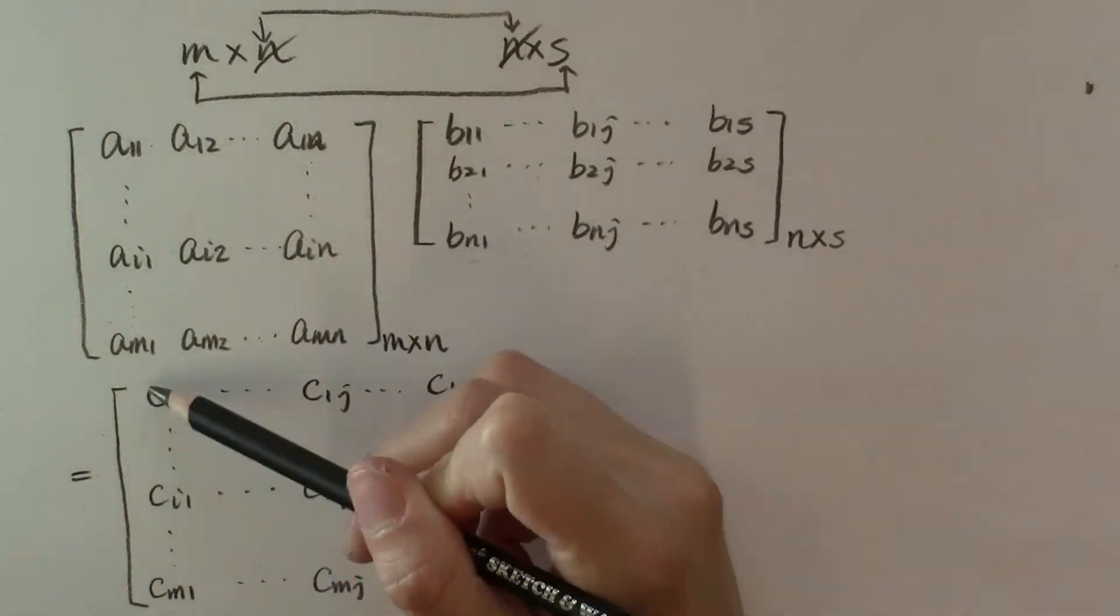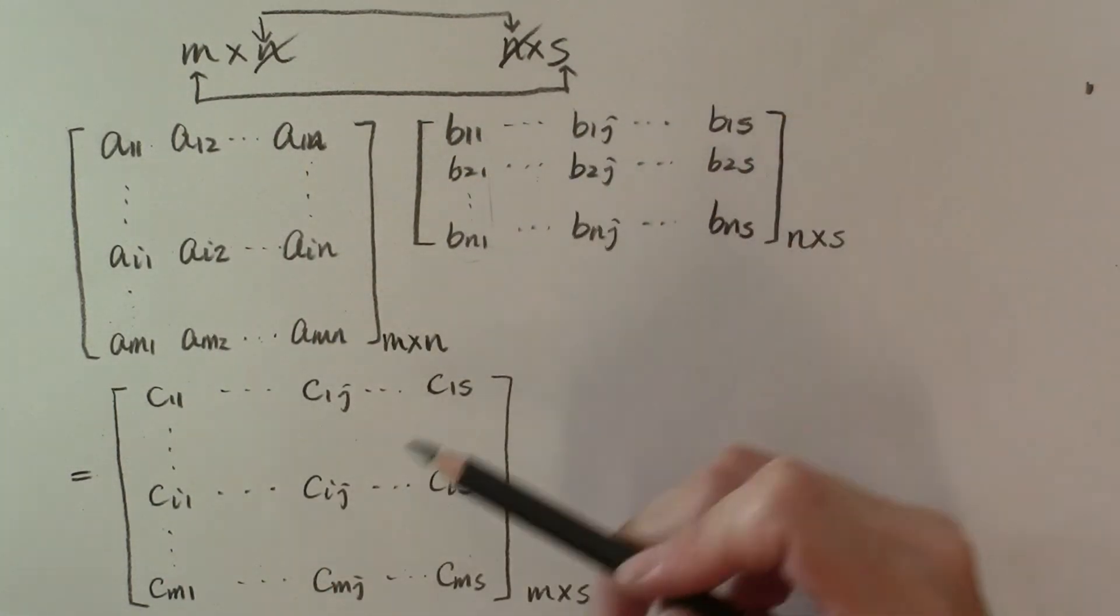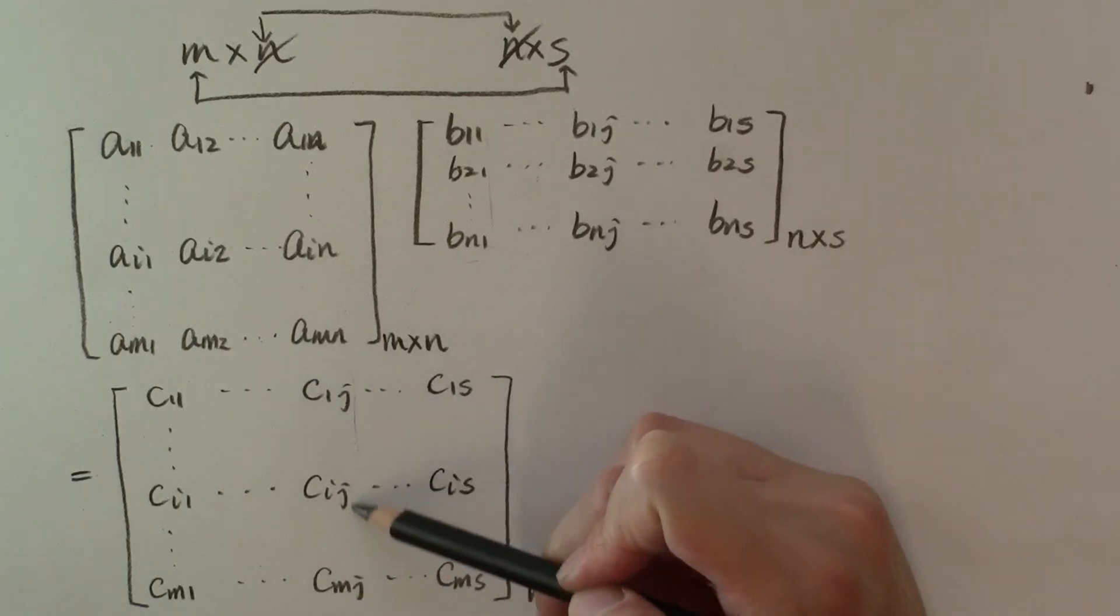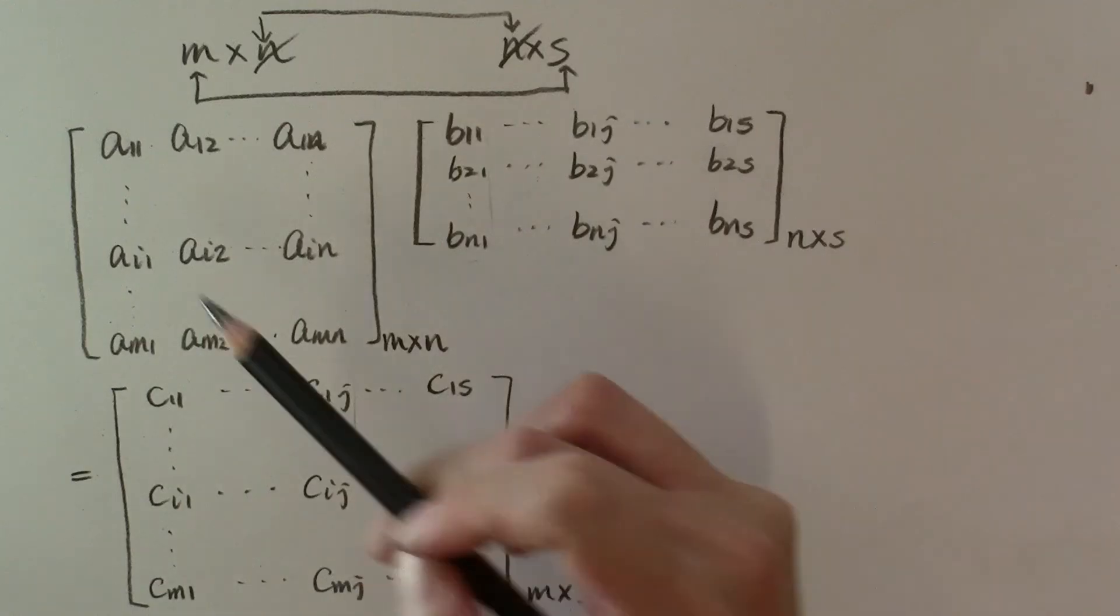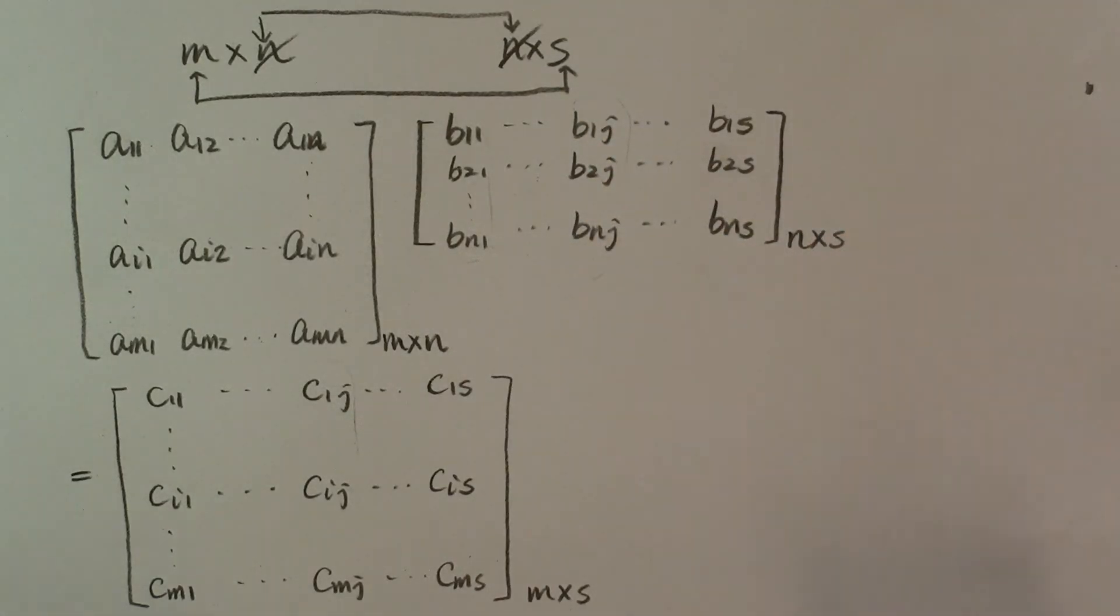So the first column of this product matrix is matrix A multiplying the first column of matrix B. And then the jth column of this product matrix is the multiplication of matrix A to the jth column of matrix B.